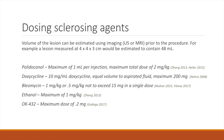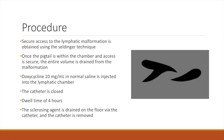Prior to the procedure, the volume of the sclerosing agent can be estimated by estimating the volume of the lymphatic malformation using measurements from ultrasound or MRI imaging. For example, if a lesion is estimated to be 4 by 4 by 3 centimeters, the volume would be estimated at 48 milliliters. Just as there is no clearly established best agent for sclerotherapy, there is no clear consensus for dosing in the literature, and dosing guidelines may vary by institution and practitioner.